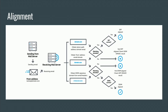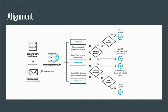So depending on the mode — strict or relaxed — one of them has to be true, or they both have to be true. If both are true, then the message will get received. I told you earlier that SPF breaks forwarding, but if you use DMARC and put it into relaxed mode, one of them can pass — so if your SPF record fails but your DKIM record passes, you will still get a pass from DMARC and your message is more likely to be delivered instead of failing.